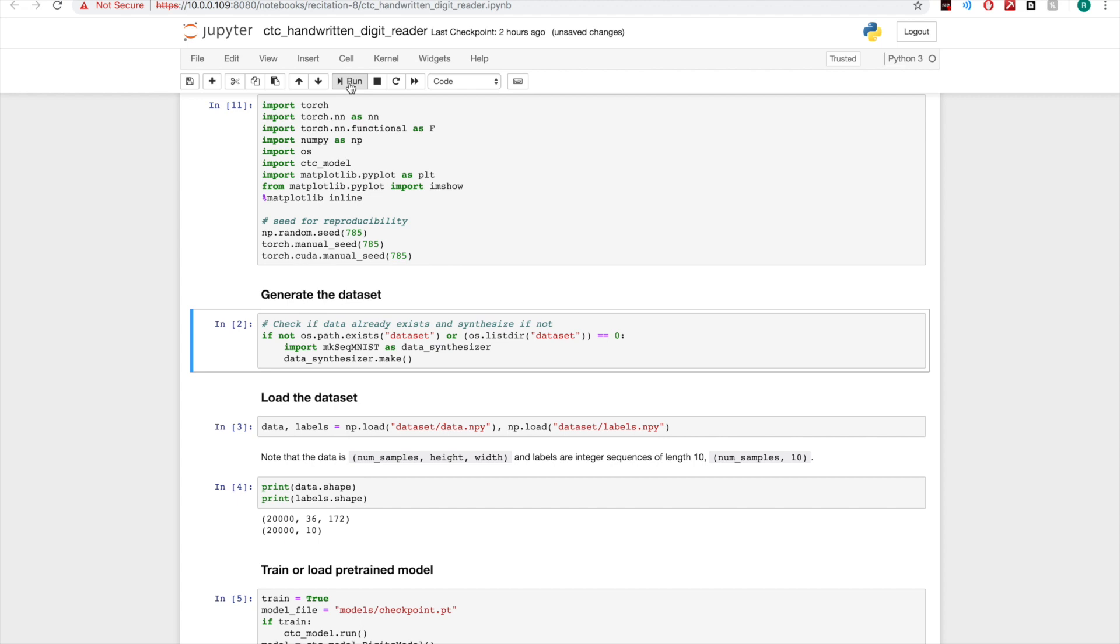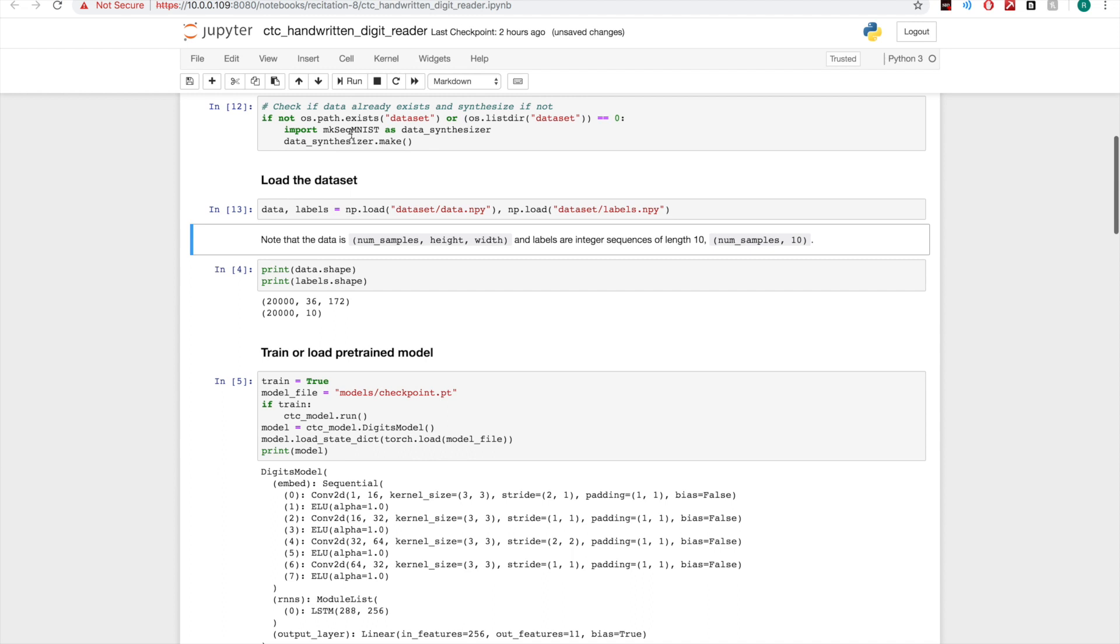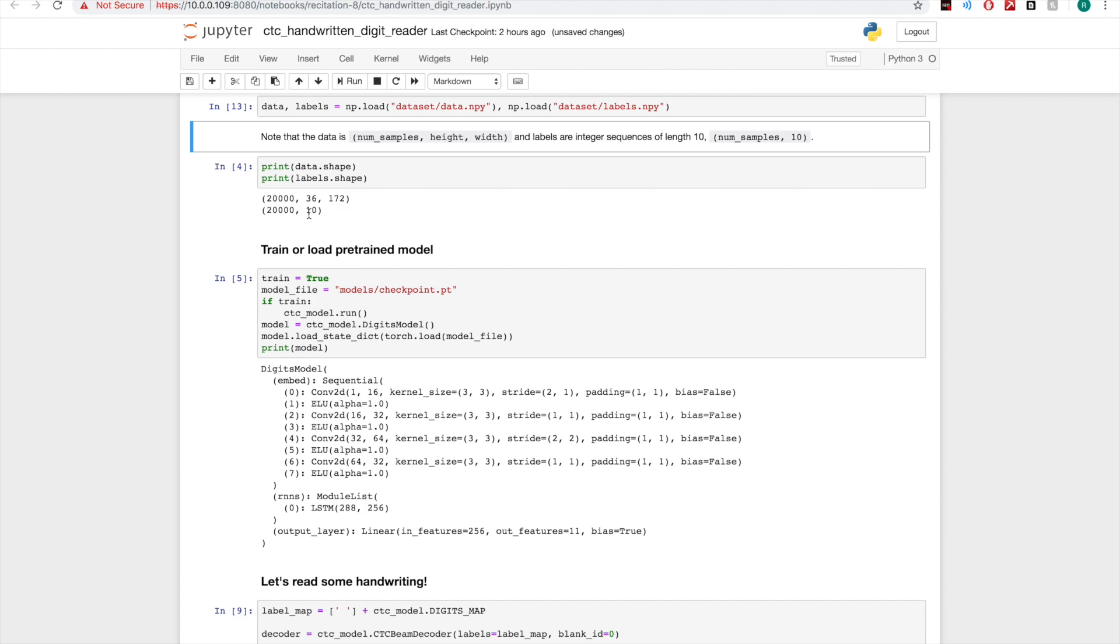So right now, in this Jupyter notebook, we can generate the dataset if it doesn't already exist. We can load the data, and you can see the data that we're dealing with here. We have 20,000 samples. These are 36 by 172 images, and each label is an integer sequence of the ground truth.